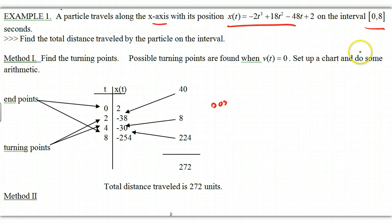And then we have a closed interval, 0 to 8. It's going to start at time 0 and finish at time 8. So we want to find the total distance traveled by this particle on the interval. So the first method is to find the turning points.